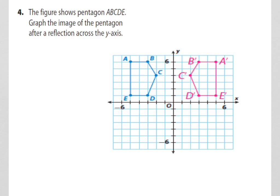Okay, so here we go. We're looking at pentagon A, B, C, D, E. Let's start with A. A is 1, 2, 3, 4, 5 units away from the y-axis. So let's make sure that we put A-prime 1, 2, 3, 4, 5 units.